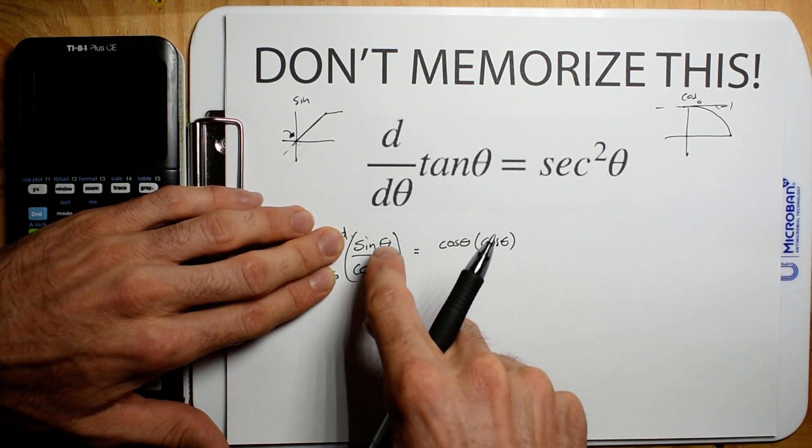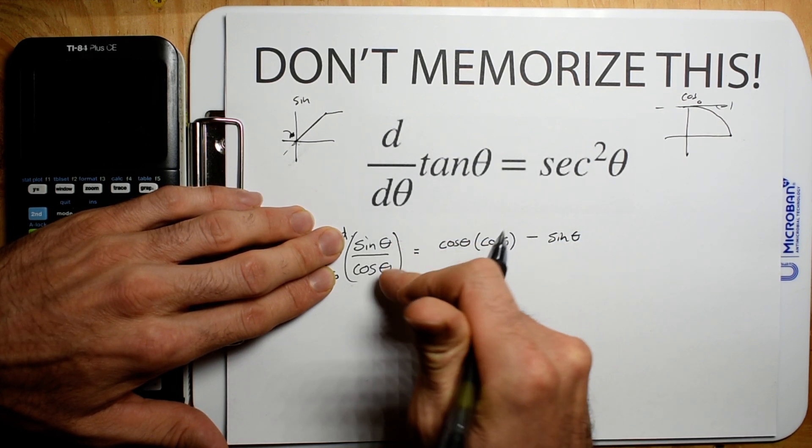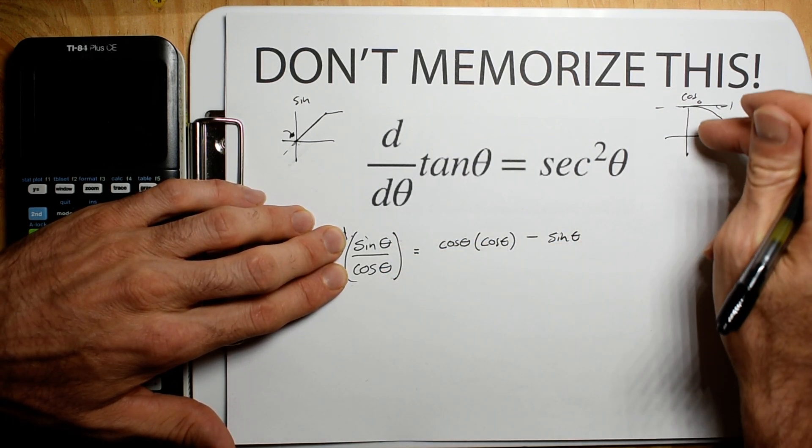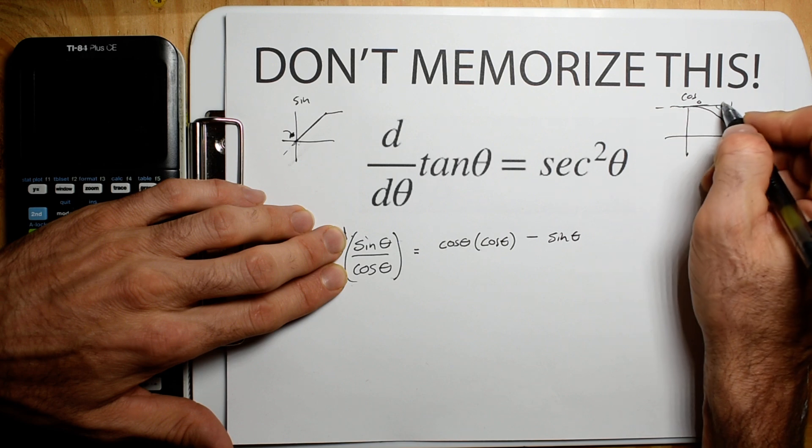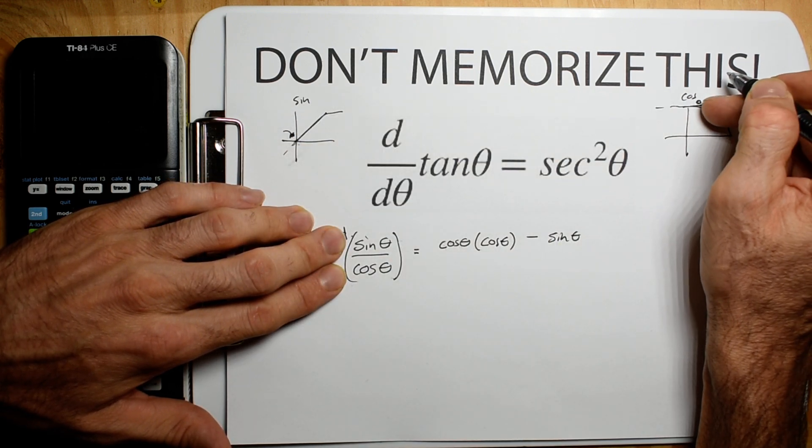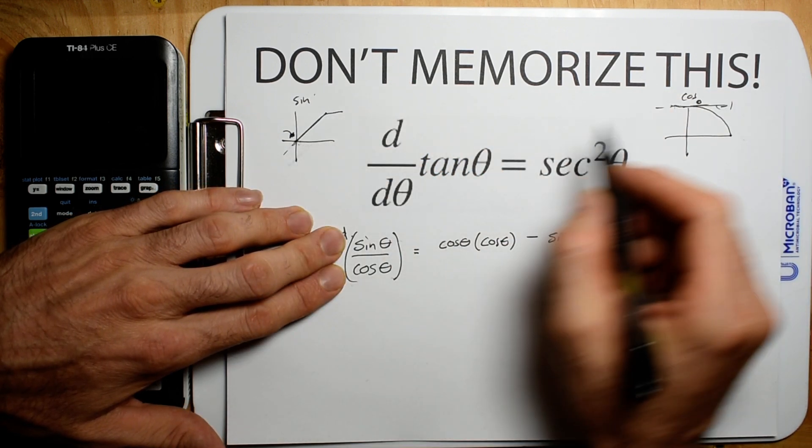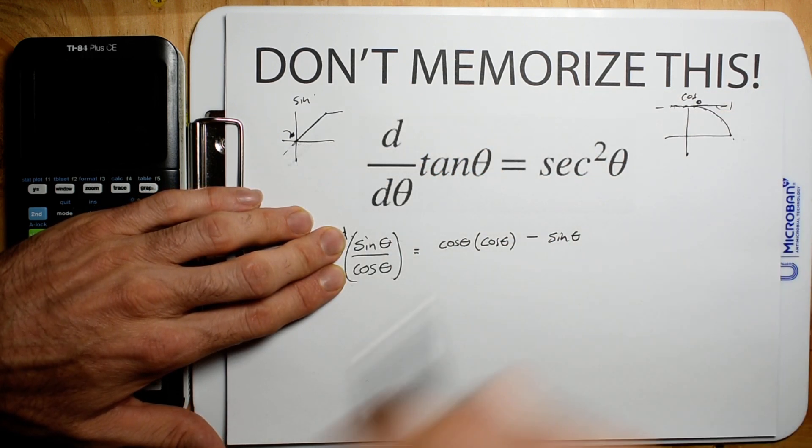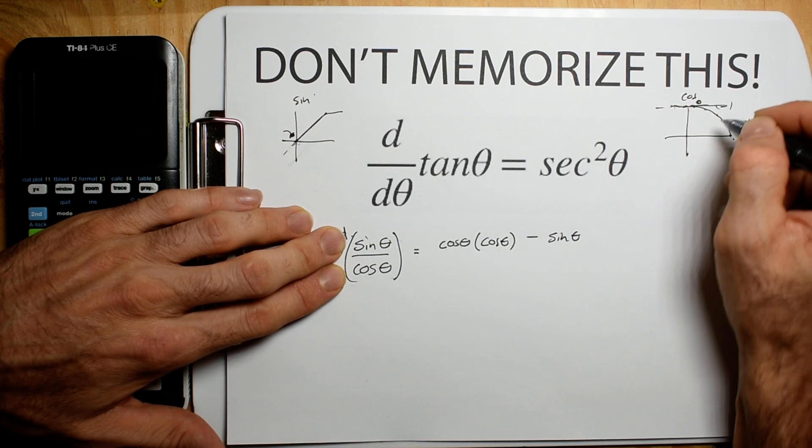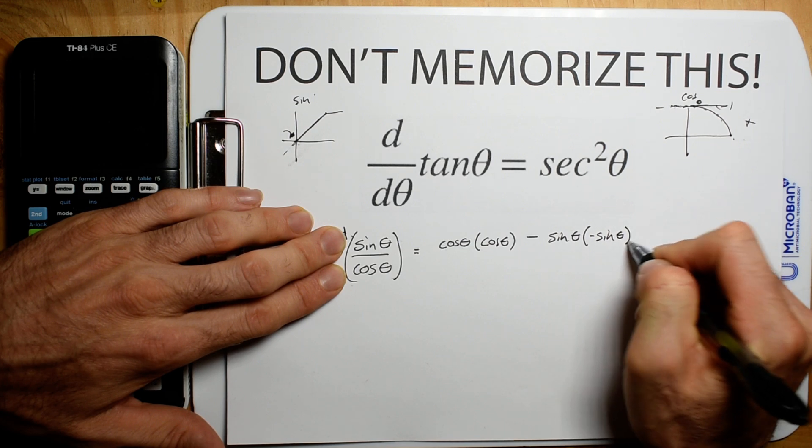So again, bottom d top minus top d bottom. What's the derivative of cosine? It's slope is 0, so what equation when you throw in 0 gives you 0? That's going to be sine. But this is a downward slope, so just remember that. I would draw this out, because visually you can see it's going to be negative sine. So we have negative sine theta.